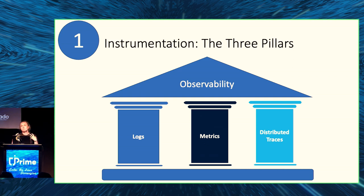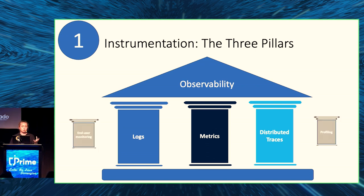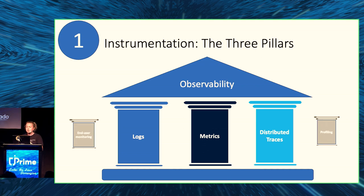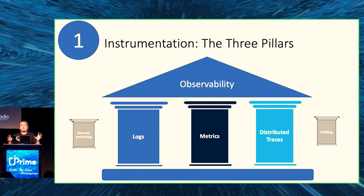End user monitoring is about gaining real-time visibility into how users experience our application — things like video recordings or tracking their path through the app. Profiling offers a way to understand where our code spends its time on hardware resources, primarily memory and CPU, right down to the individual line number. These are hoped to eventually be incorporated, but at the moment the three core pillars are the focus.